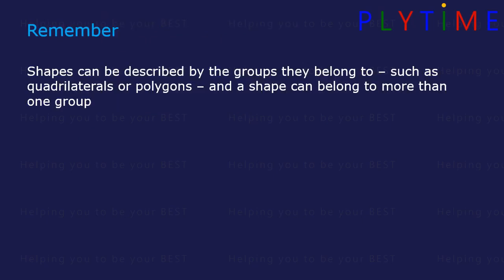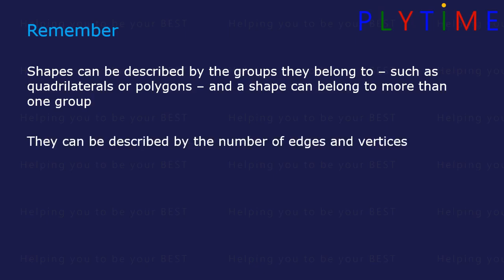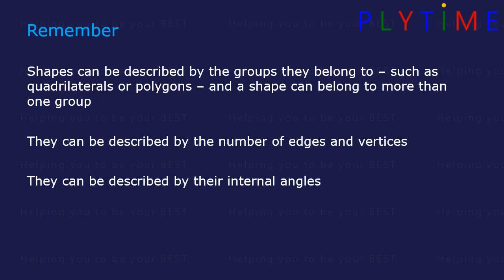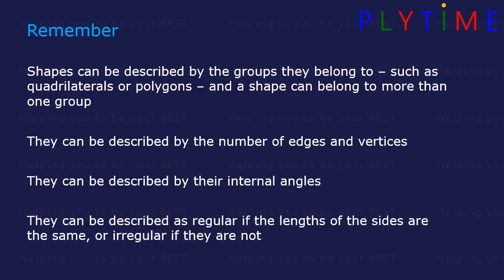Remember, shapes can be described by the groups they belong to, such as quadrilaterals or polygons, and a shape can belong to more than one group. They can be described by the number of edges and vertices, by their internal angles, and as regular if the lengths of the sides are the same, or irregular if they are not.